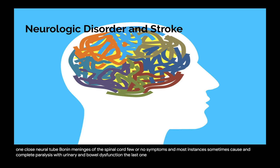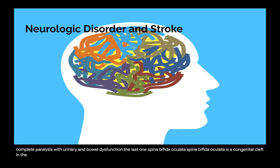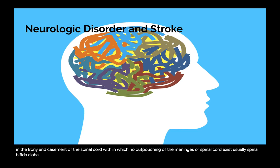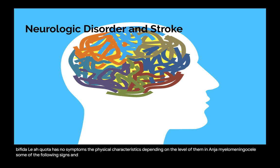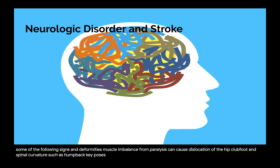Spina bifida occulta is a congenital cleft in the bony encasement of the spinal cord in which no outpouching of the meninges or spinal cord exists; it usually has no symptoms. Physical characteristics may include bony deformities — muscle imbalance from paralysis can cause dislocation of the hip, club foot, and spinal curvature such as kyphosis, scoliosis, or lordosis. Loss of sensation — lack of skin sensitivity to pain, temperature, and other sensations — can lead to inadvertent burns or trauma unrecognized by the patient. Frequent position changes are necessary during dental hygiene care.